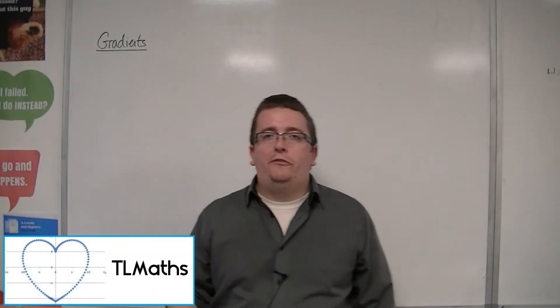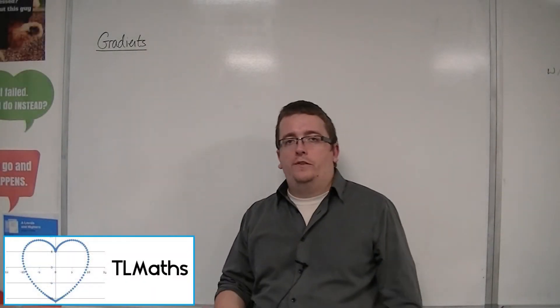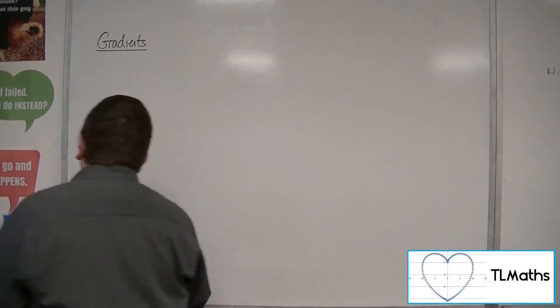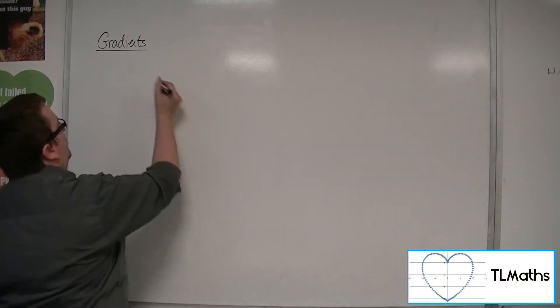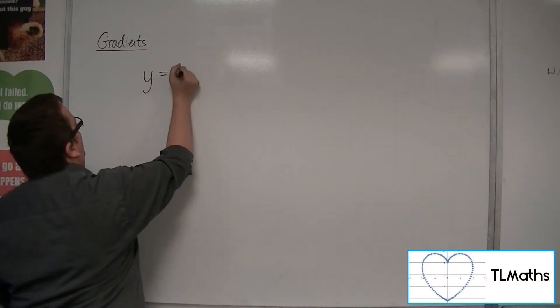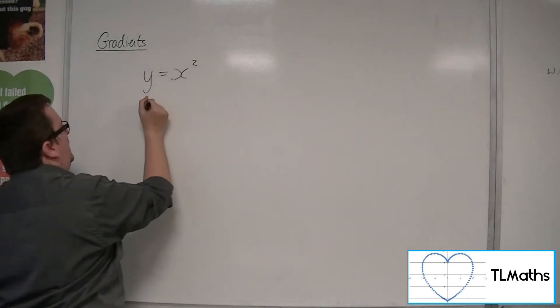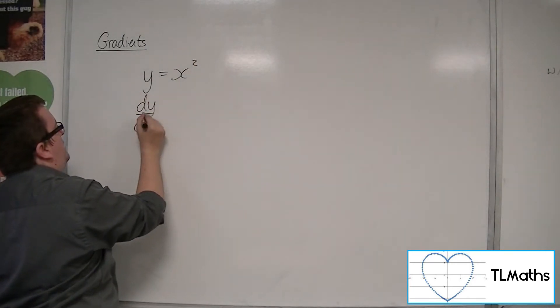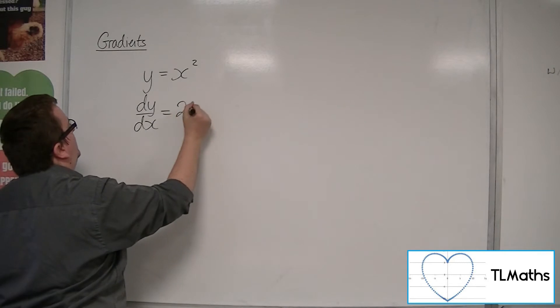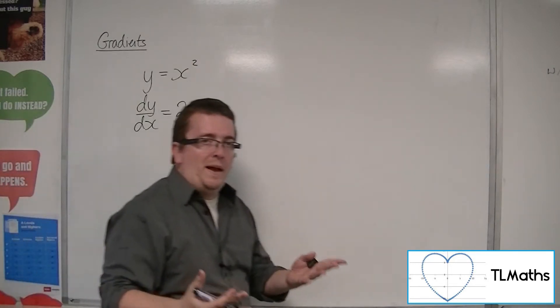So by now you'll be used to finding the gradient function of a curve. So if I had, for example, y equals x squared, then the gradient function we know is going to be 2x. The 2 comes down to the front, you take 1 off the power.